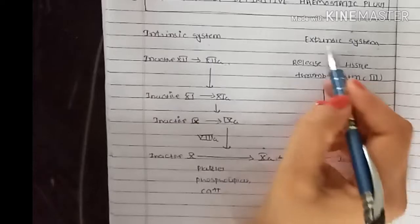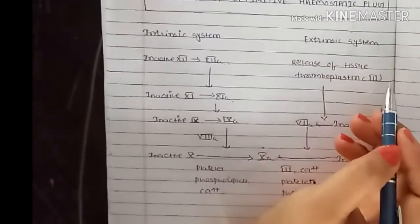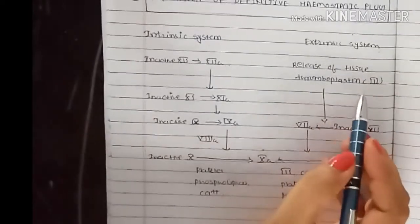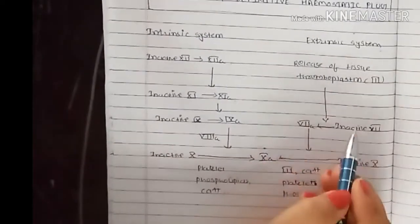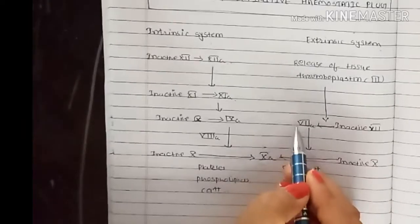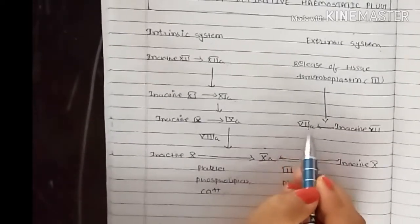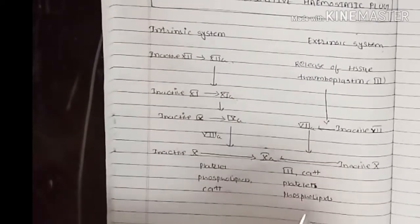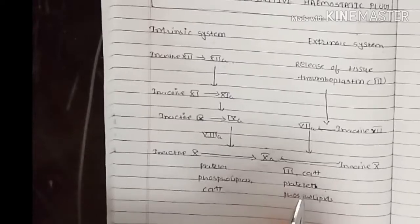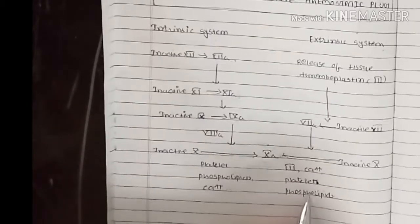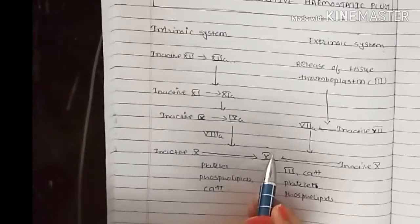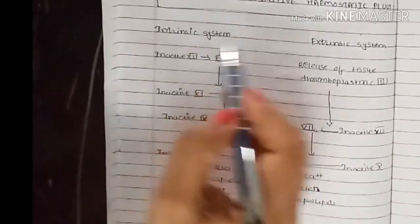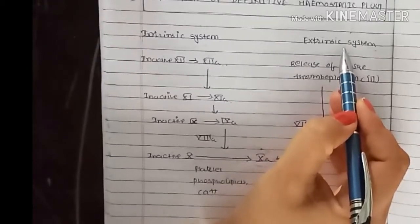When the extrinsic system of hemostasis gets activated, it causes release of tissue thromboplastin. Released tissue thromboplastin causes activation of factor 7. Activated factor 7 causes activation of factor 10, in the presence of factor 3, calcium, and platelet phospholipids. So, activation of factor 10 is a key reaction in both pathways of hemostasis.